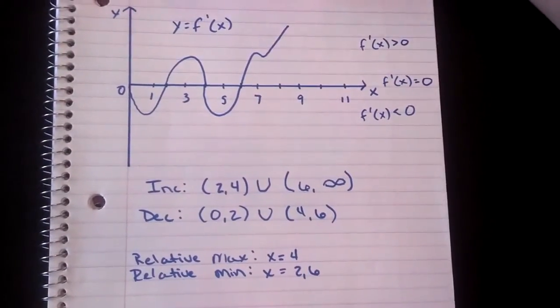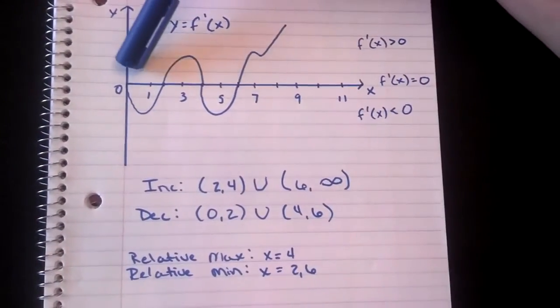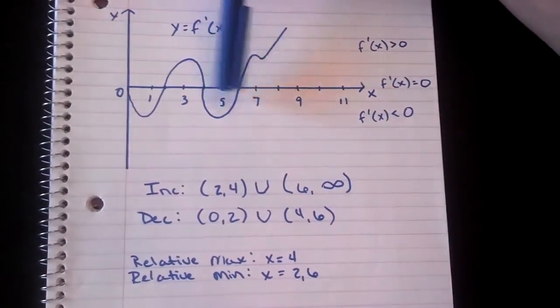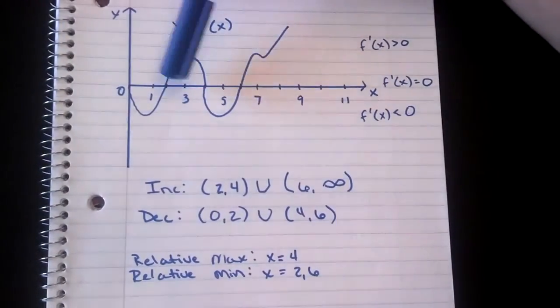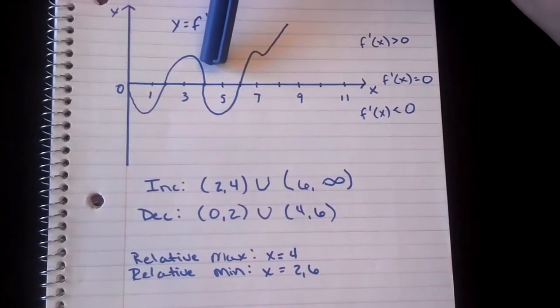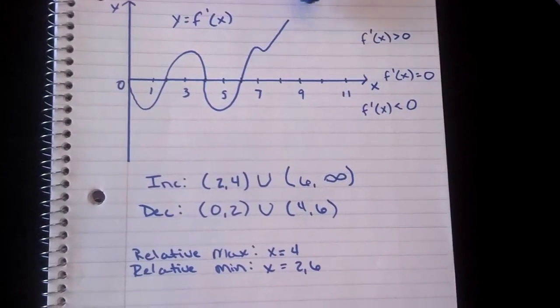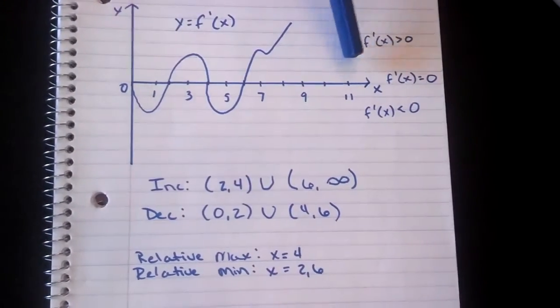So for the two points that are decreasing, we have 0 to 2 and 4 to 6. Those are both decreasing values. The increasing values is from 2 to 4 and from 6 to infinity because the graph never comes back down to touch the x-axis.